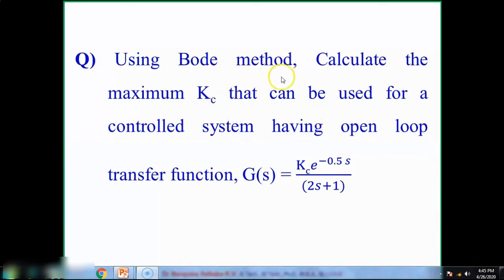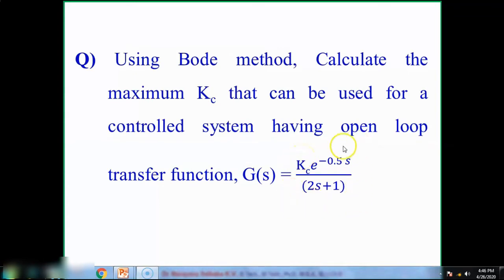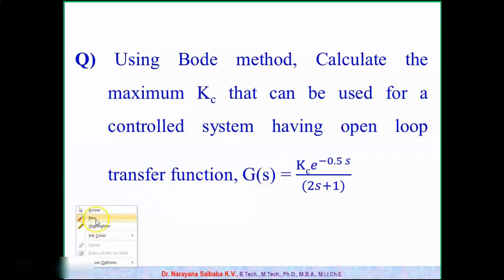The given problem is: using the Bode method, calculate the maximum kc that can be used for a control system having open loop transfer function G(s) = kc × e^(−0.5s) / (2s + 1). Here, a proportional controller is used and we are asked to find the maximum value of kc using the given formulas.